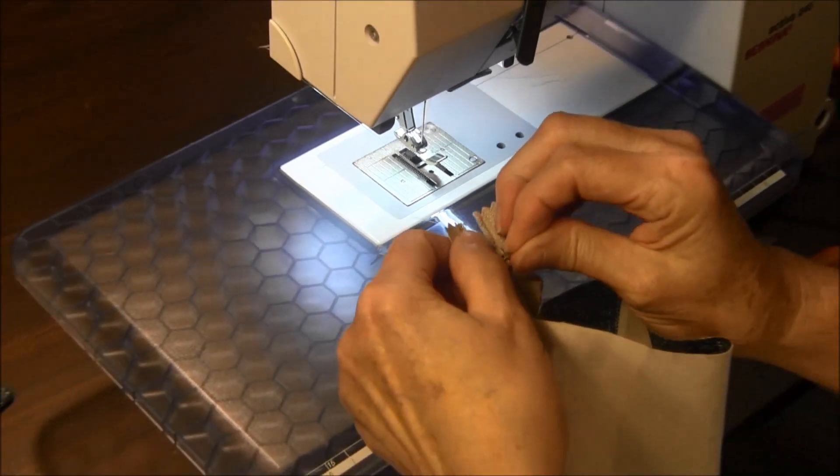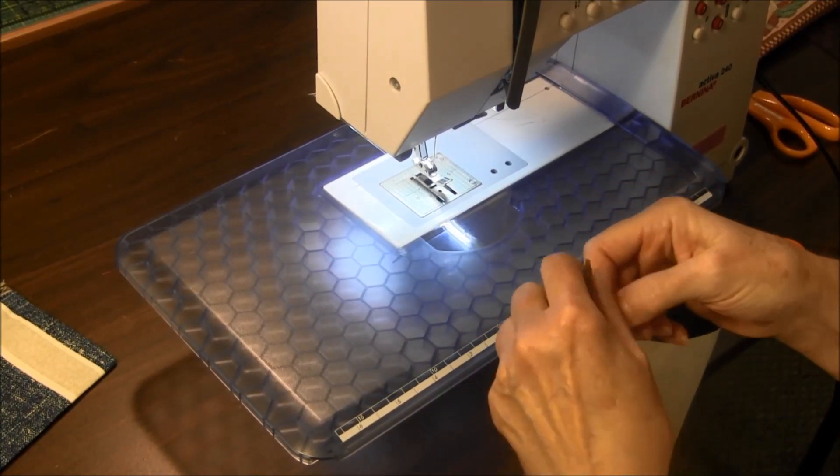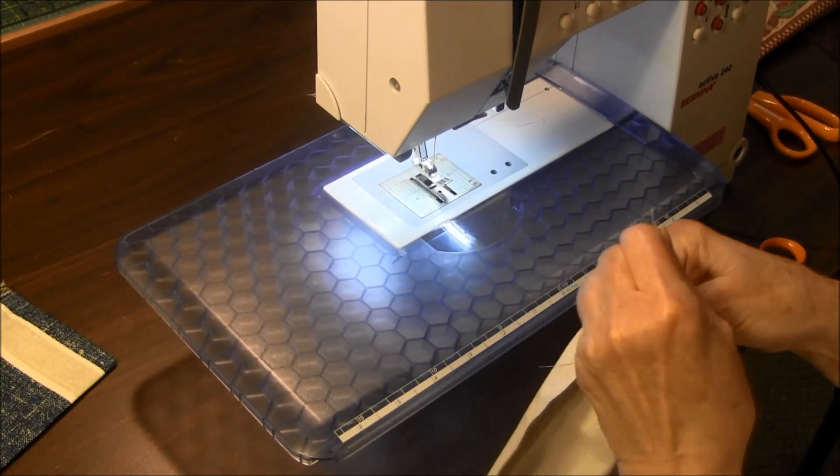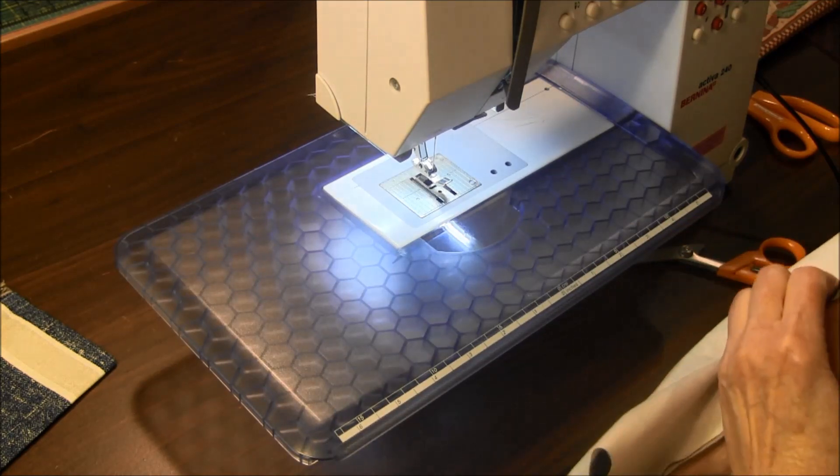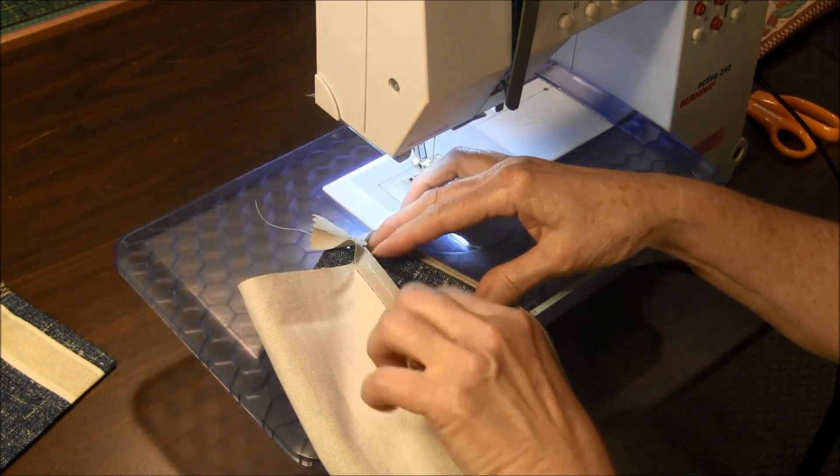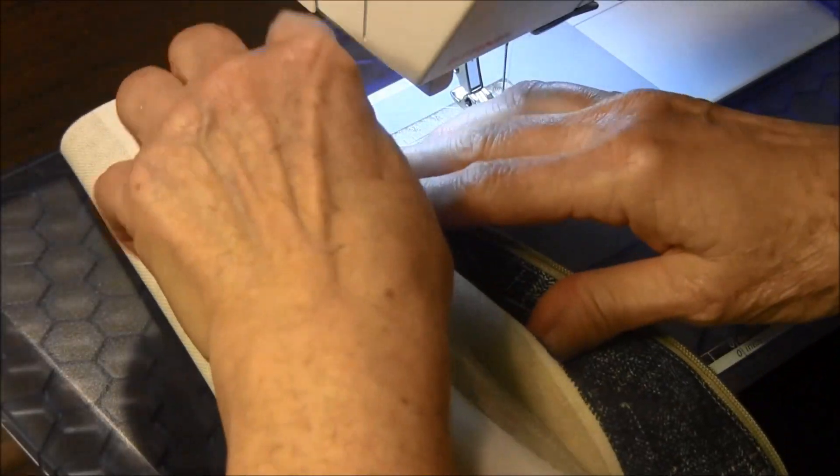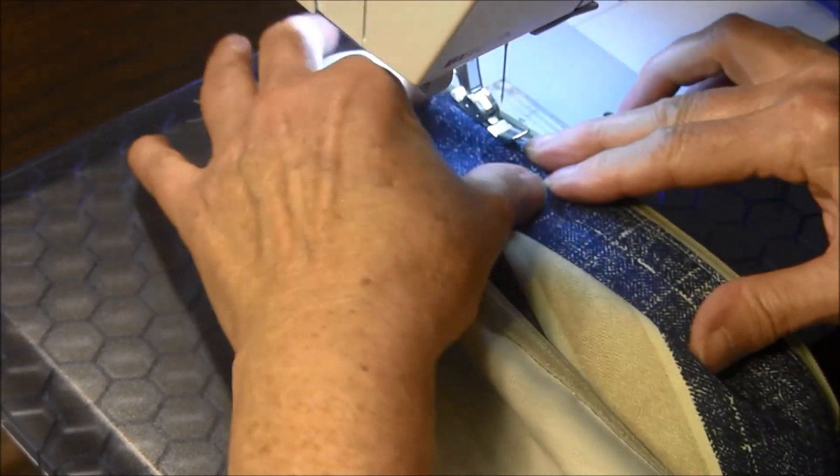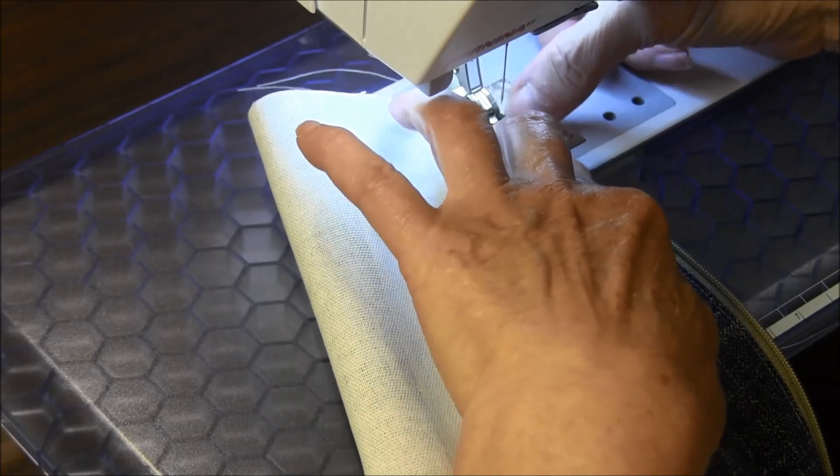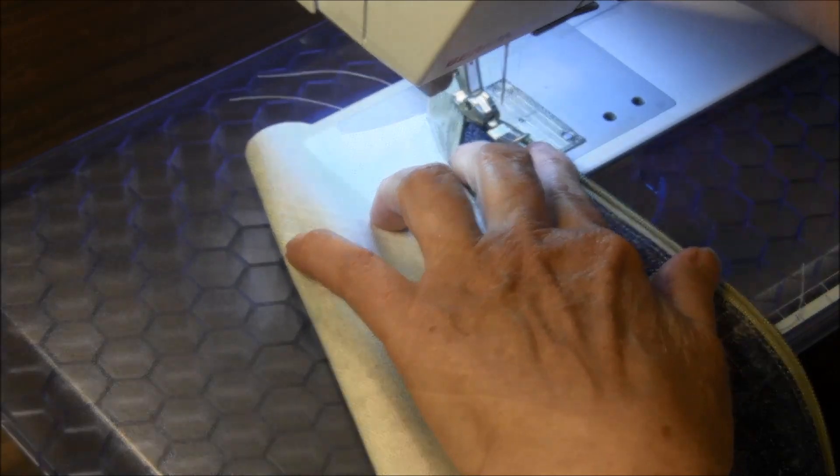We're going to open the zipper so that we can top stitch on this side. Okay, again put another row of stitches along there.